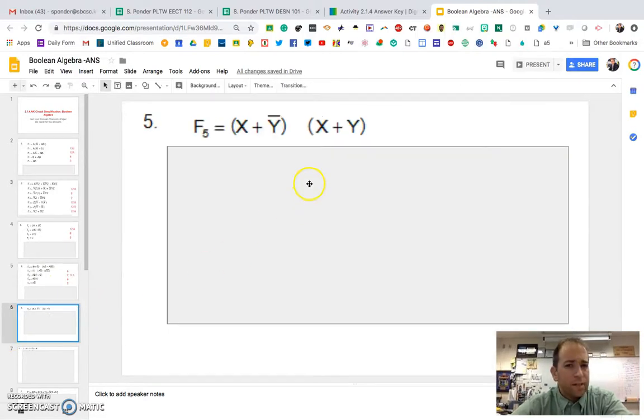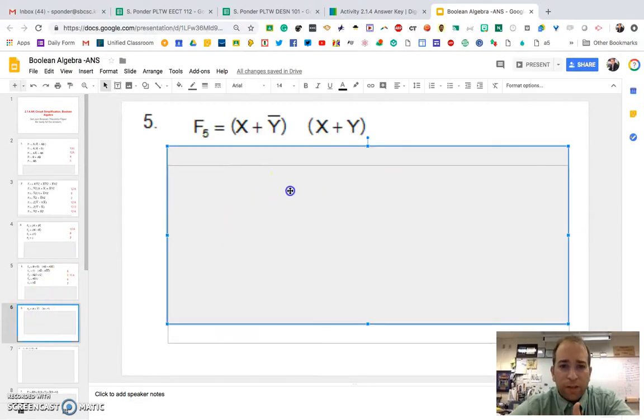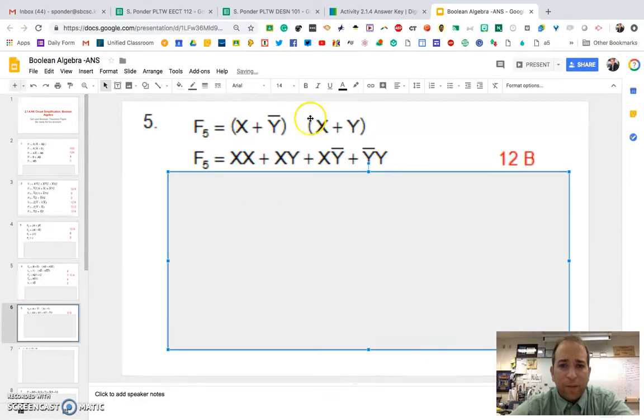Number five. I'm looking at the slide number. Sorry, number five. Here we go. So we have something that looks like this. We start out with that, and then we just distribute it all out where you have multiplication out. So X times X, and then XY, and then X not Y, just distribute the not Y.